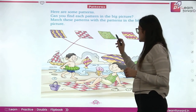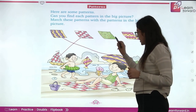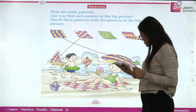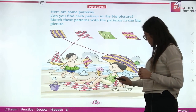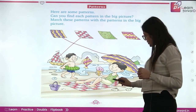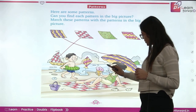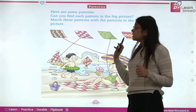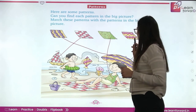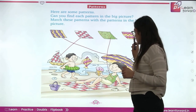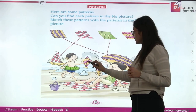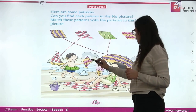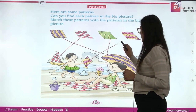Now, this is green and yellow. She is wearing the green and yellow. Now, last is your pink and yellow — pink and yellow is a kite. So this pattern is here.